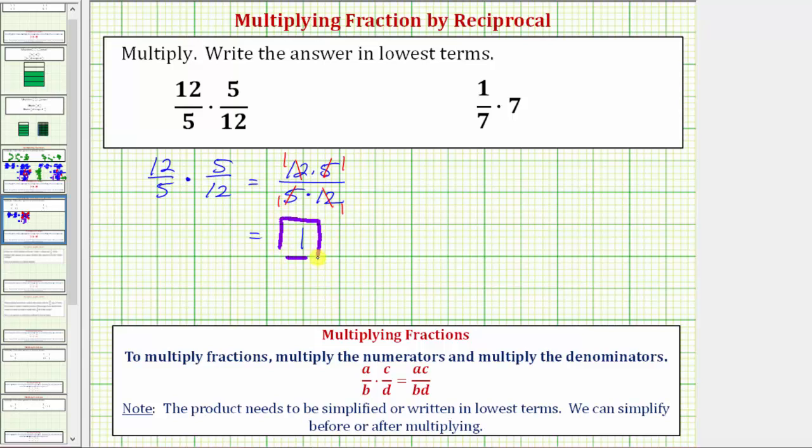If we look back at our product, there's a special relationship between these two fractions. Here we have 12 fifths and here we have 5 twelfths. These are called reciprocals.